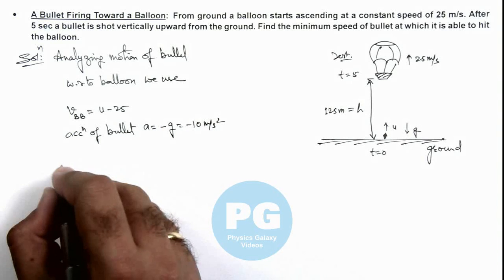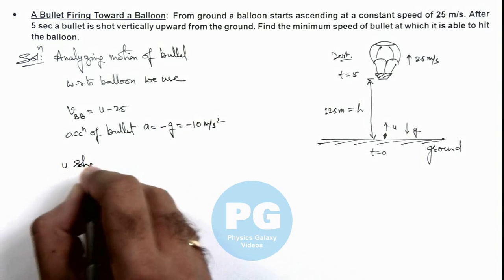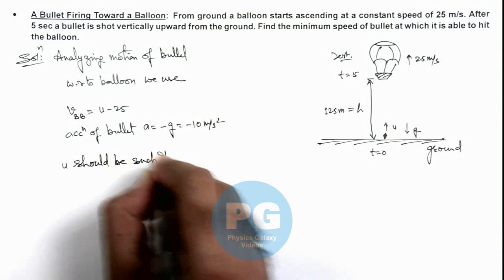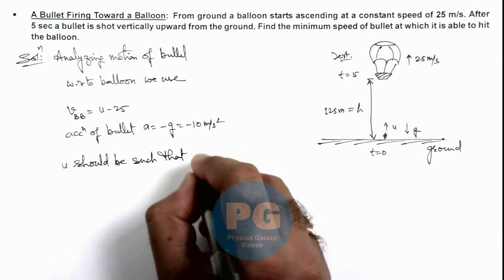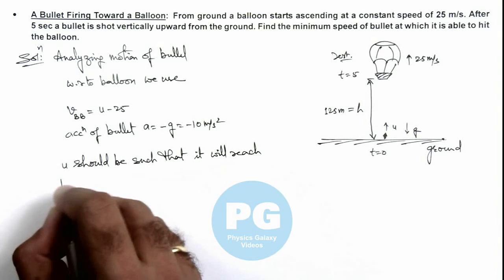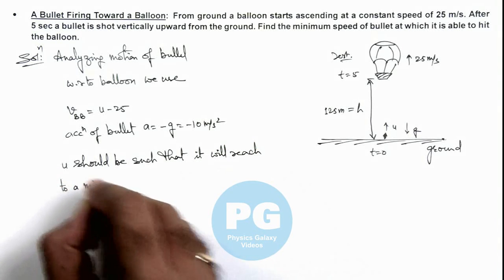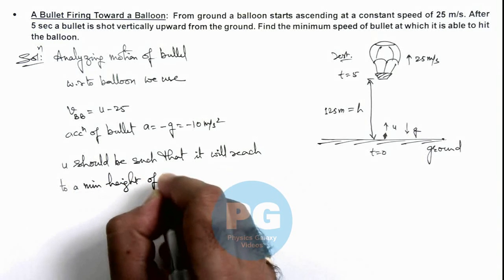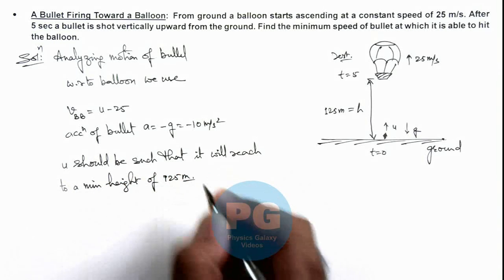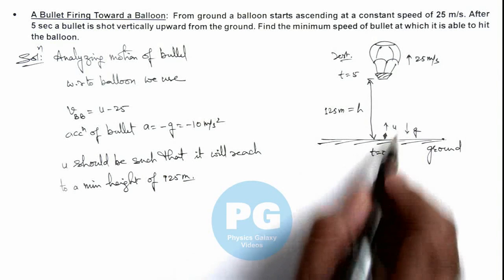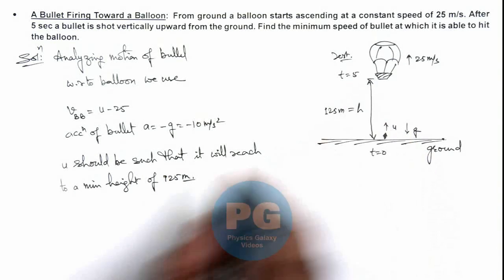Here we need u should be such that it will reach to a maximum height of 125 meters. Or u should be a value so that its maximum height attained would be 125 meters.